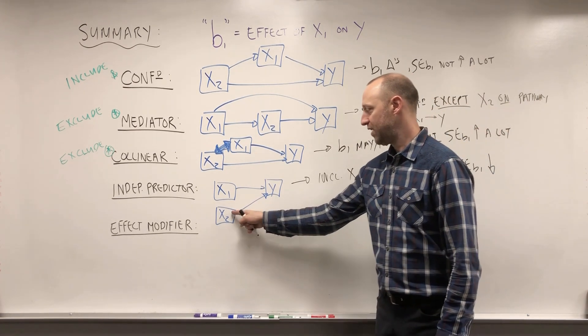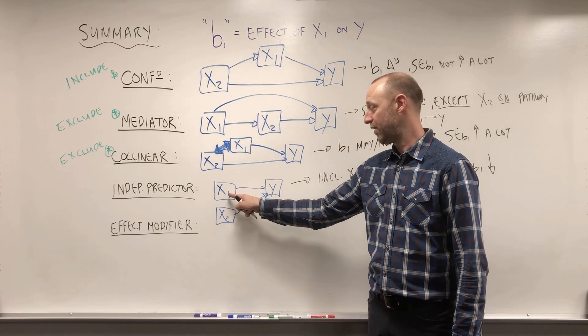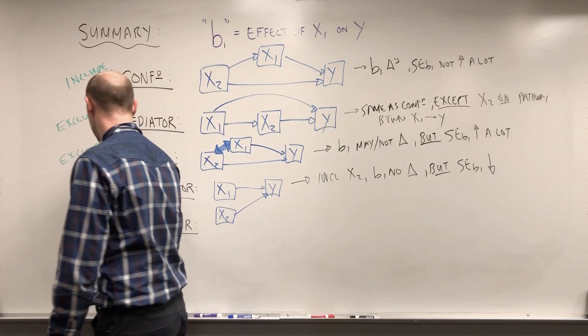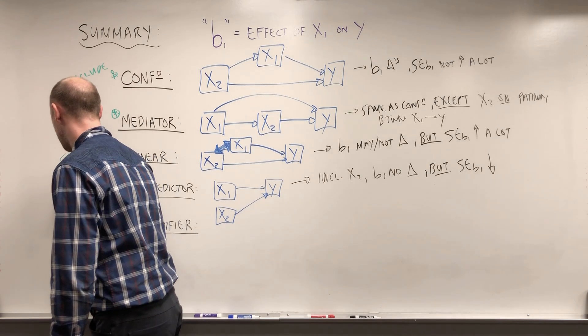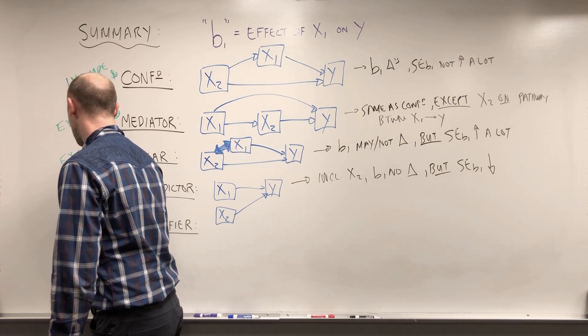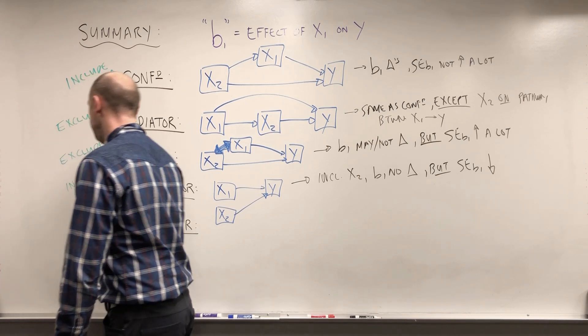Again, if X2 gives us a better estimate of the outcome, we're going to get a more precise estimate of the effect of X1 on the outcome. So independent predictors, we talked about arguments for including these or excluding these. So to quickly recap that.